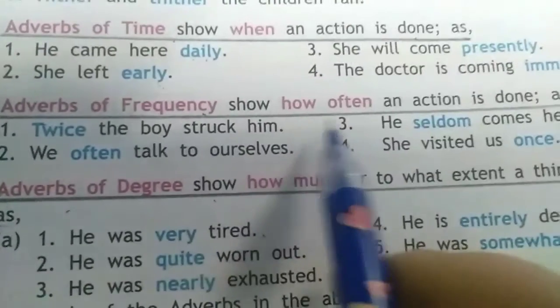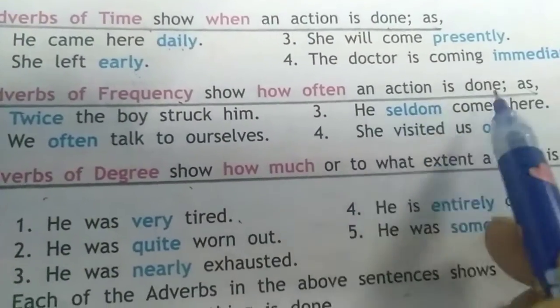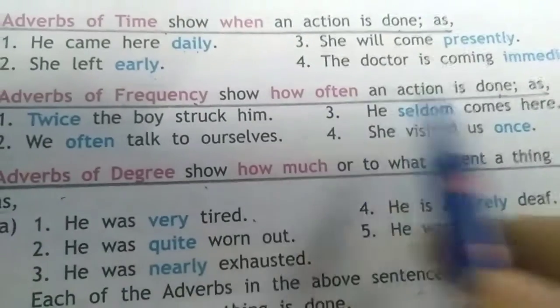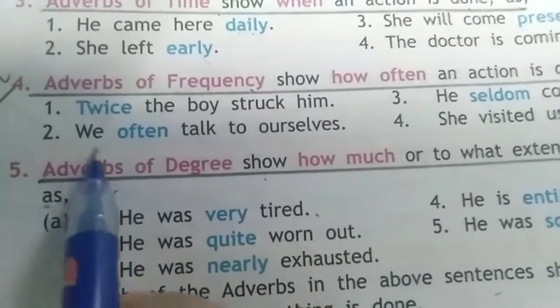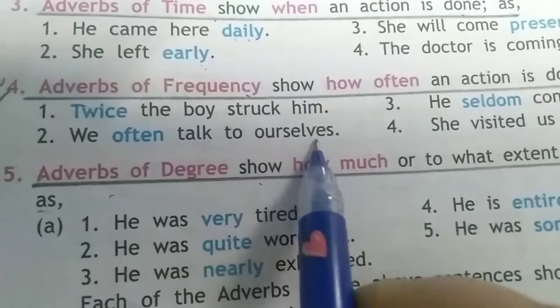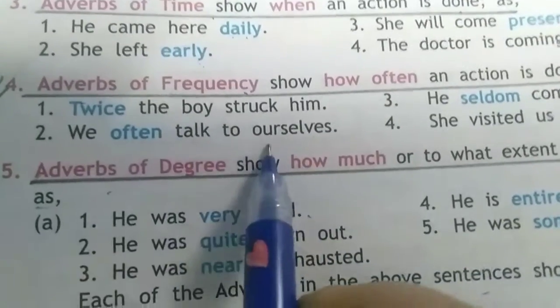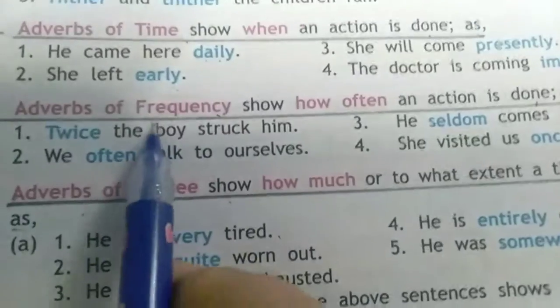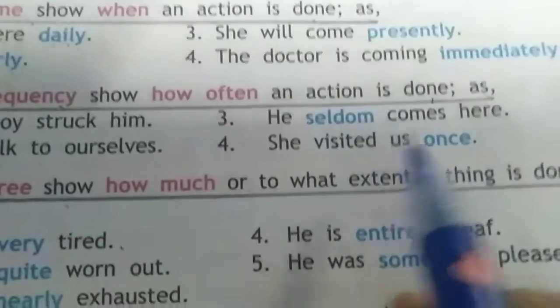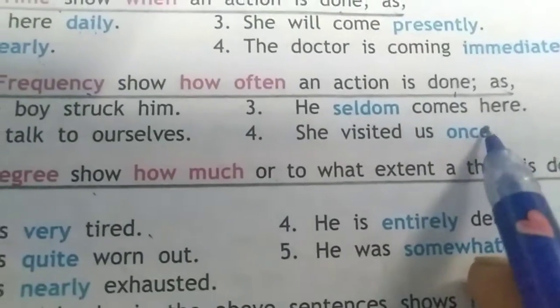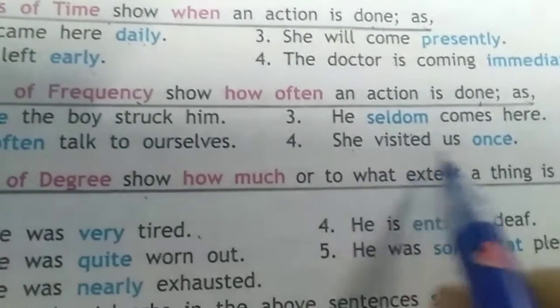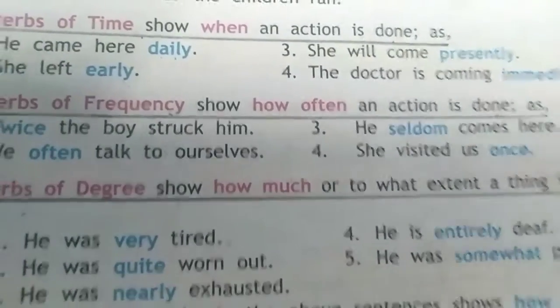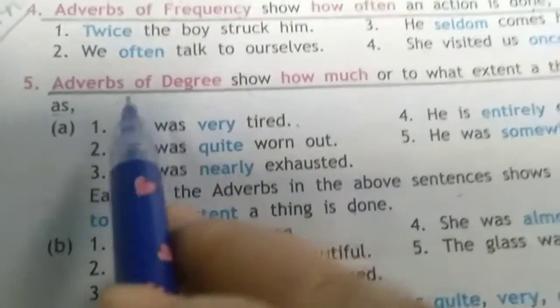Adverb of frequency shows how often an action is done. For example: 'Twice the boy struck him' — how often? Twice. 'We often talk to ourselves' — 'often' is adverb of frequency. 'He seldom comes here' — seldom means sometimes — this is adverb of frequency. 'She visited us once' — 'once' is adverb of frequency.